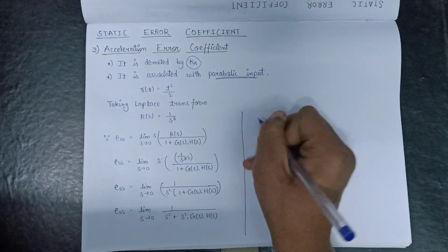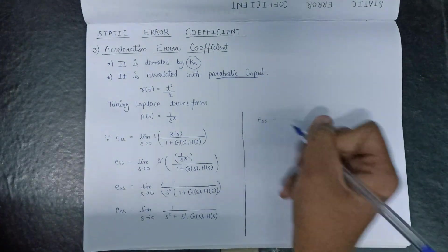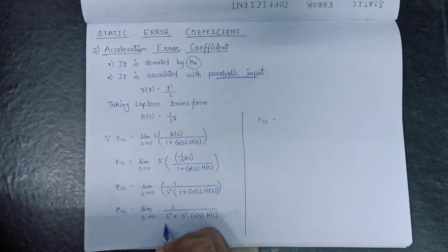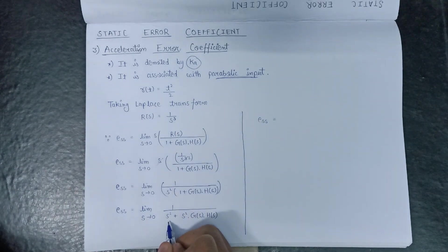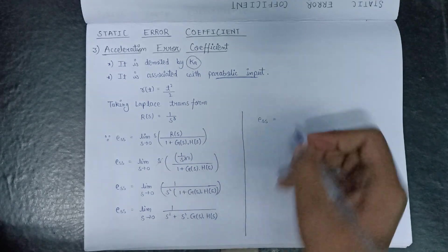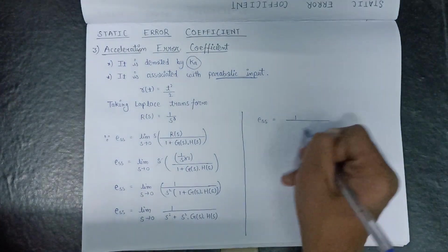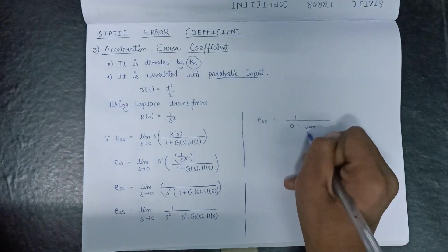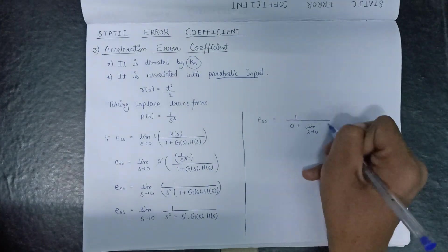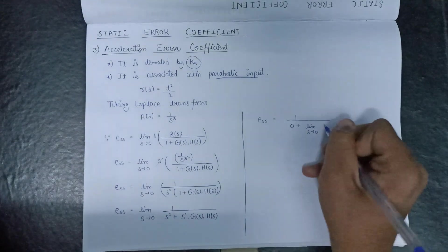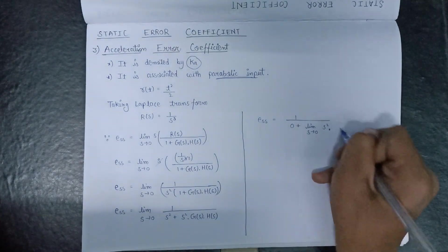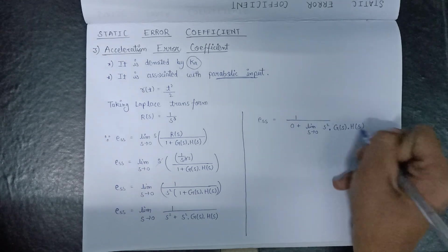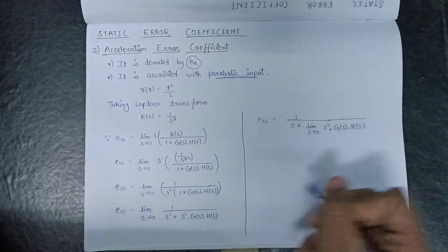So E(s) will become, since s is tending to 0, thereby this s² term will become 0 only. So 1 over (0 + limit s tends to 0, s²·G(s)·H(s)) we get in the denominator.